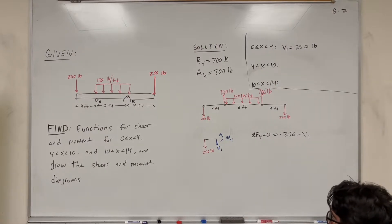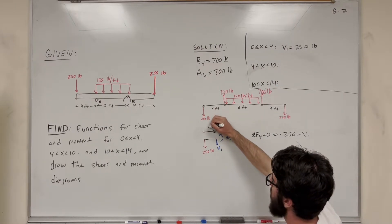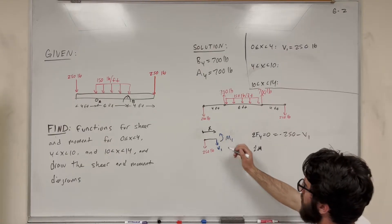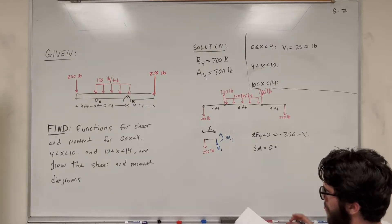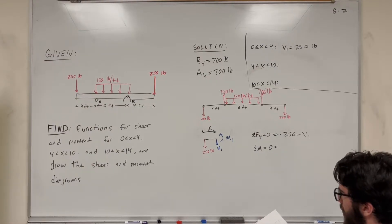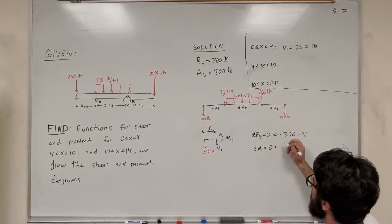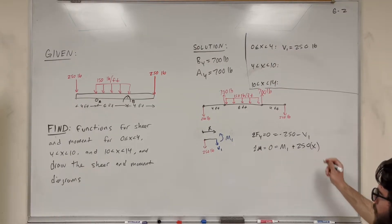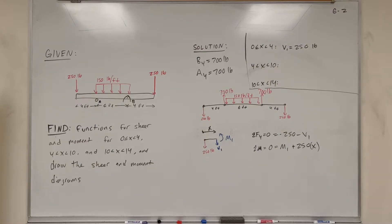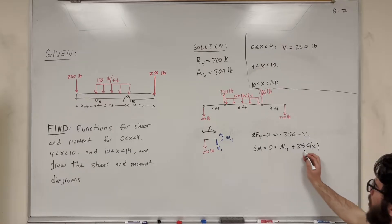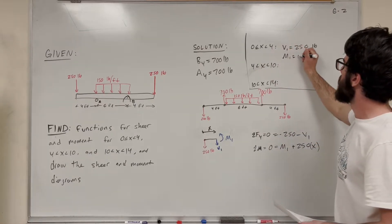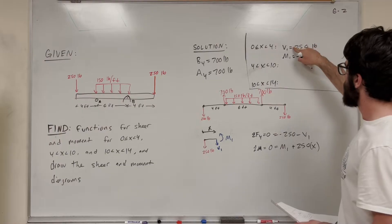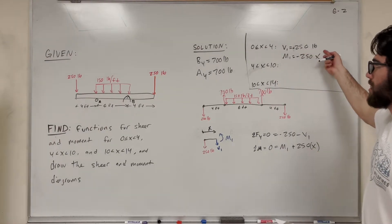Now for the moment equation. The distance going this way is X. Taking the sum of moments around the cut equal to zero: this 250 force is making us go that way, so we add 250 times X. Solving, you get M1 equals negative 250X. Those are our two equations for this first region. Let's move on to the next cut.